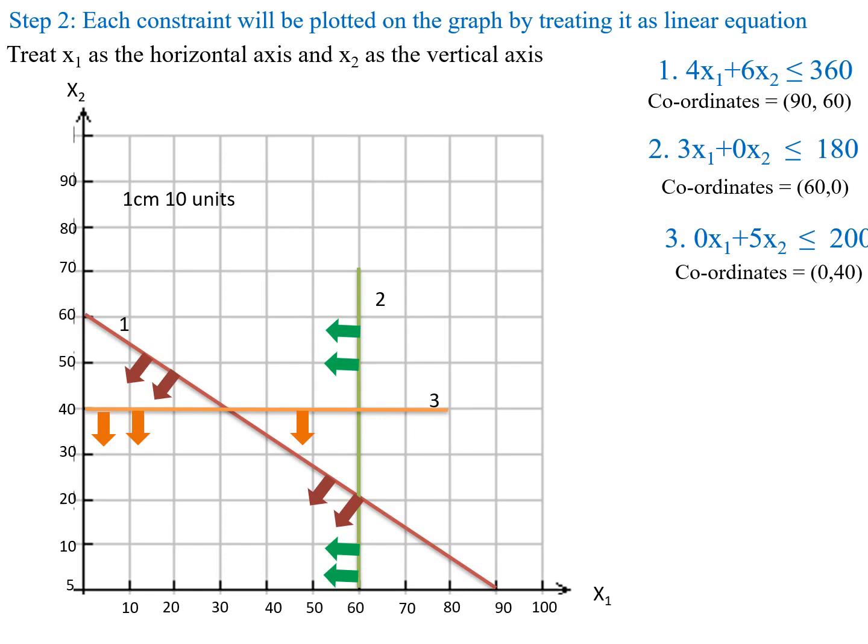Next we have to mark the region for each constraint based on the inequality symbol. All the constraints have the less than or equal to symbol. When constraints have the less than or equal to symbol, we consider the region below the constraint line.